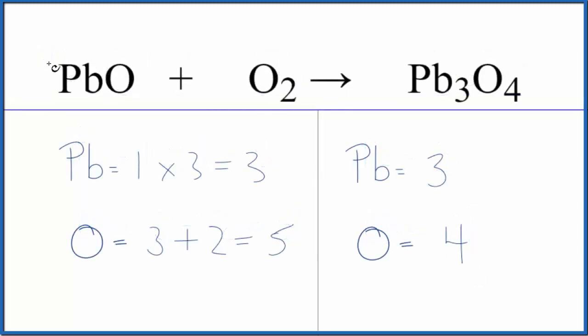So instead of three, we'll put six here. And then let's update these numbers here. So we have one times six, we have six lead atoms. One times six, that's six oxygens, plus the two here. So now we have eight.